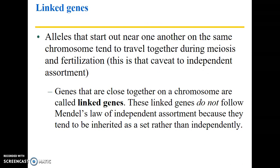Let's talk about linked genes. Genes can recombine with one another, particularly in the F2 generation. Alleles that are physically close to one another on the same chromosome tend to travel together during meiosis and fertilization. This is the caveat to independent assortment mentioned earlier. Genes close together on a chromosome are called linked genes and do not follow Mendel's law of independent assortment — they tend to be inherited as a set rather than independently.